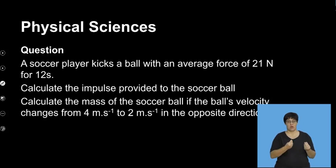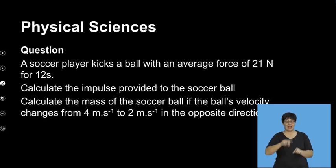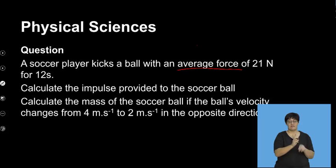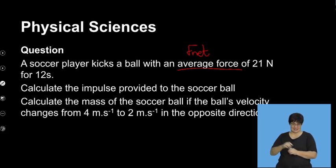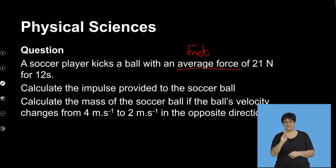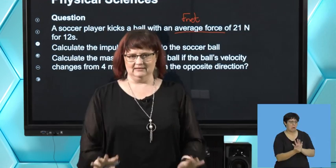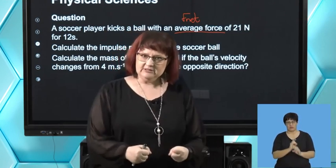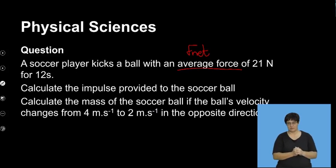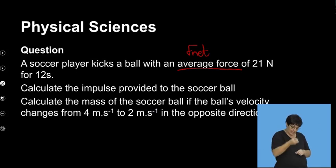We have a soccer player who kicks a ball with an average force of 21 newtons for 12 seconds. Average force here means F net. We're going to simplify these to only looking at F net — we're going to keep it simple. What we're going to calculate is the impulse provided to the soccer ball.